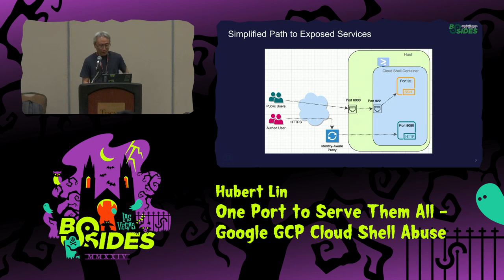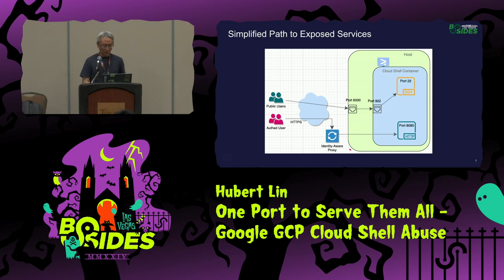By adding what we found to the Web Preview, the diagram now could look like this. On the left-hand side, the authenticated user can access the internal HTTP service running on the Cloud Shell container through the Identity Aware Proxy, or IAP, over the HTTPS channel.